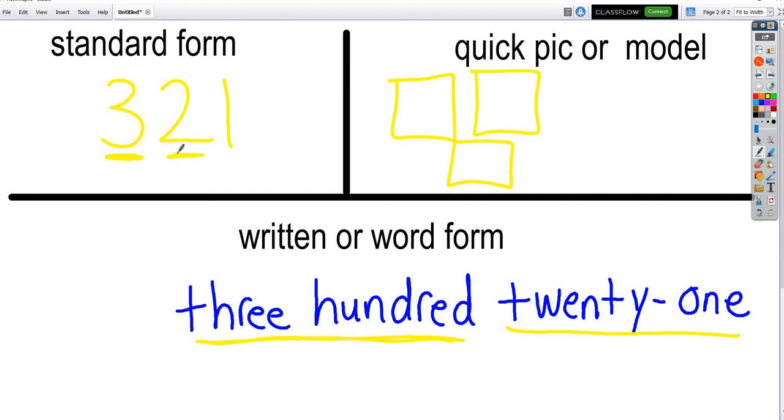Over here, it tells me 21 has 2 tens. Let's see. 10, 20. Oh, yeah. 21. Oh, yeah. I think that we did it right because it has 300s. It has 2 tens. And it has 1, 1. And that does say 100, 200, 300. 10, 20. 300, 20, 1. Awesome. We did it.